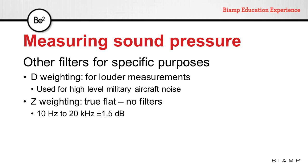The Z weighting is a true flat frequency response. This response replaces the older linear or unweighted responses, as these did not define the frequency range over which the meter would be linear. Z weighting is a flat frequency response between 10 Hz and 20 kHz, plus or minus 1.5 dB.